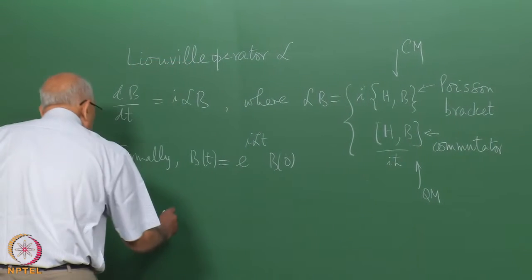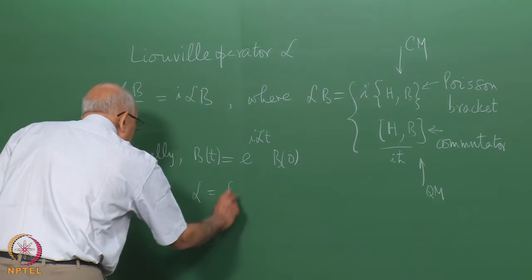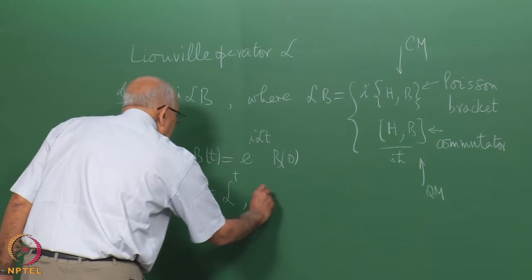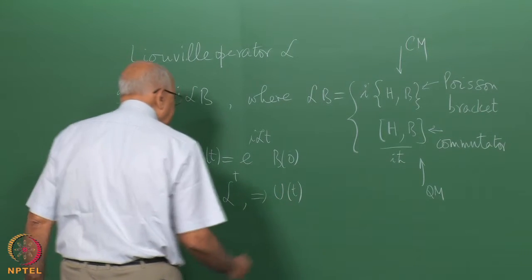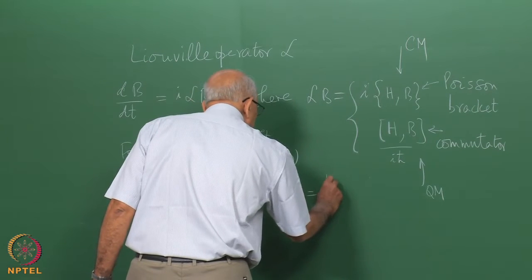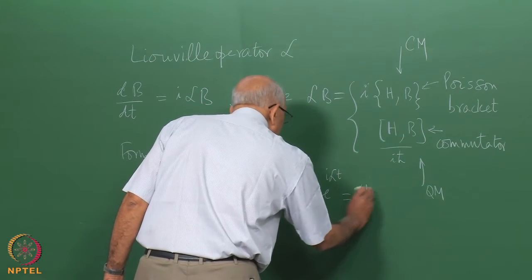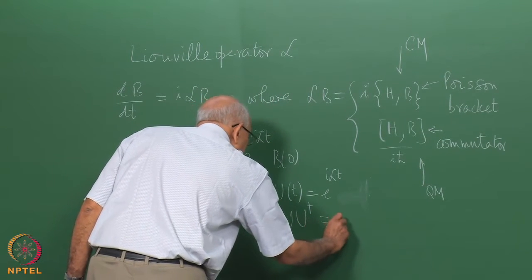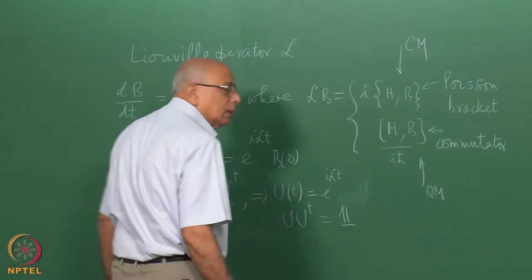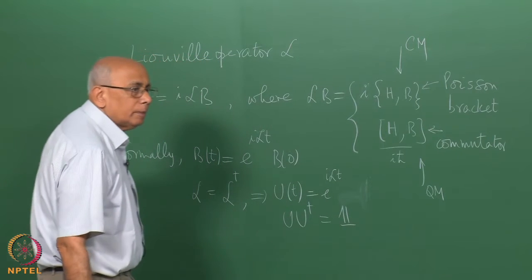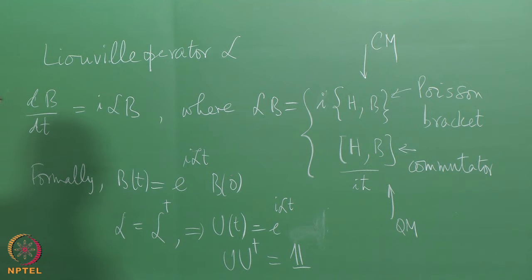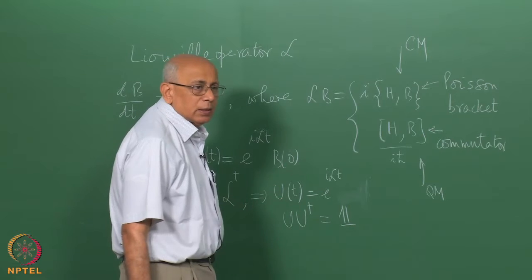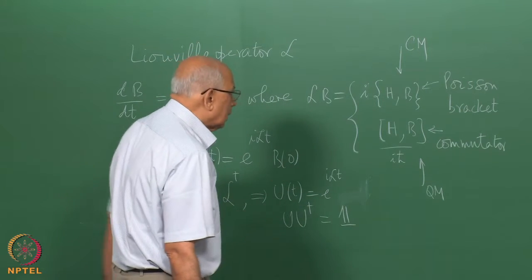We also saw that on an appropriate space, L equal to L-dagger implies that U(t) = e^{iLt} is such that U U-dagger equals the identity operator — it is a unitary operator. The interpretation of this fact is that probability is conserved, or measure is preserved.